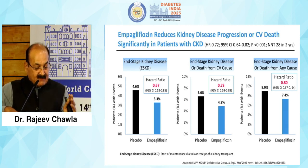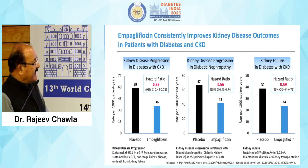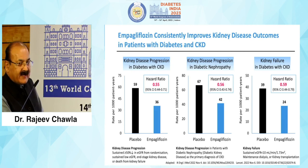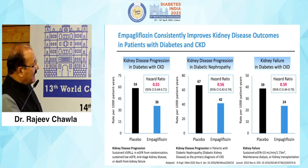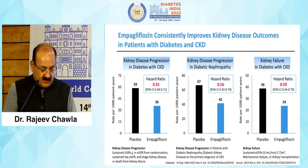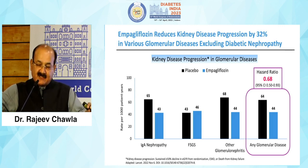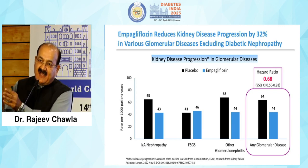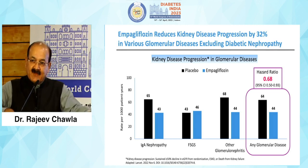In EMPA-Kidney, empagliflozin versus placebo established a reduction in the composite endpoint of CV death and renal composite endpoints by almost 28 percent — a very significant p-value with a number needed to treat of only 28. Empagliflozin significantly reduced kidney disease progression or CV death in CKD patients. End-stage kidney disease was reduced by 33 percent; end-stage kidney disease or death from CV cause by 27 percent; and end-stage kidney disease or death from any cause by 20 percent.